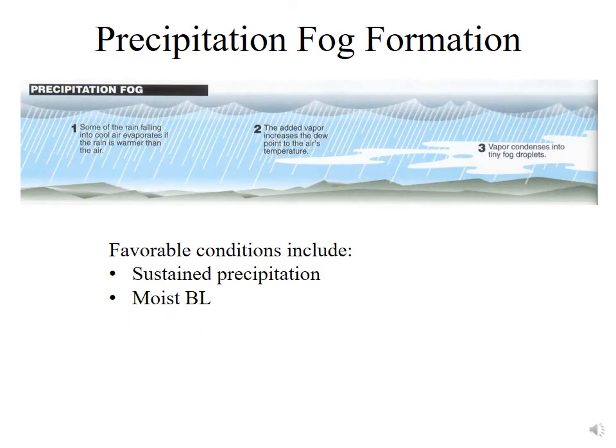We can also have precipitation fog, which occurs because rain falling into the air evaporates and raises the relative humidity. This added vapor increases the dew point and can eventually cause the air in the boundary layer to become completely saturated, at which point fog forms without much of a temperature difference at all. The favorable condition for this is sustained precipitation, which leads to a very moist boundary layer.